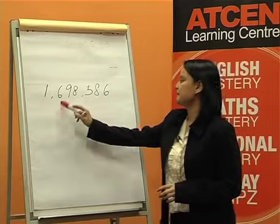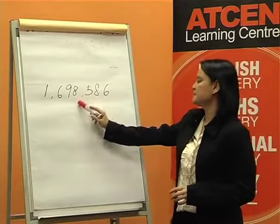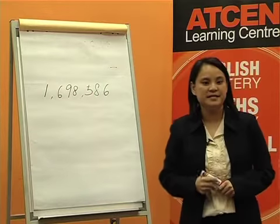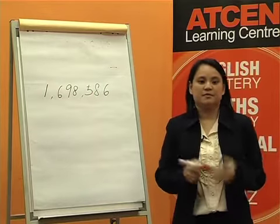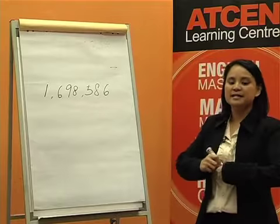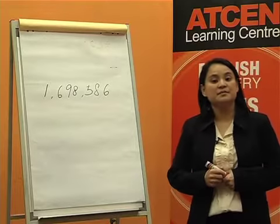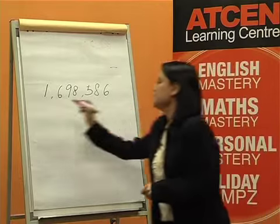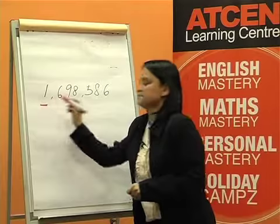Round 1,698,586 to the nearest million. First, locate the place to which the number is to be rounded — the million place.